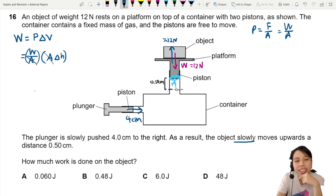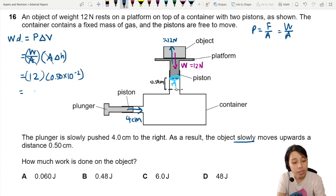So the nice thing is that the area, although we don't know it, we can cancel it out. All you need to substitute in is the weight 12 times the change in height, which is 0.5 cm, so times 10 to the negative 2. That should give me a value of 0.06 joules.